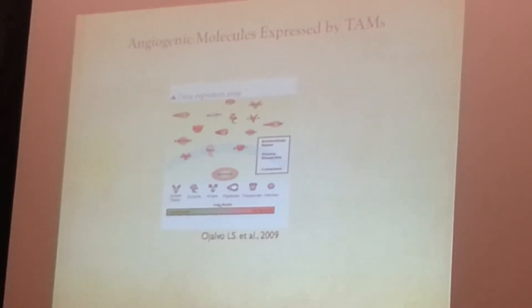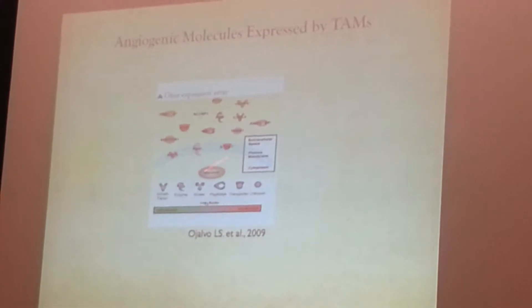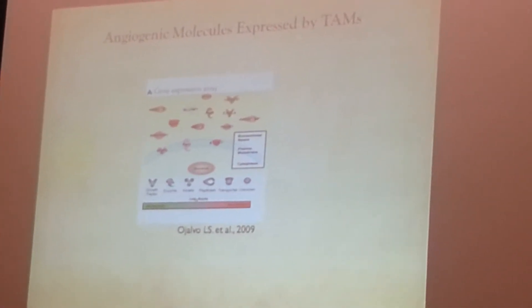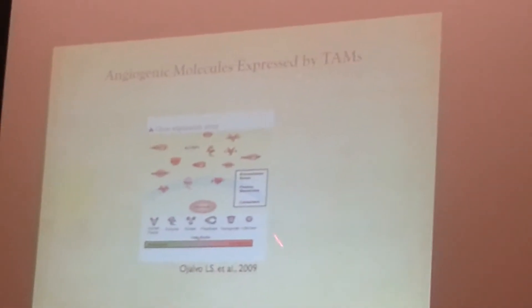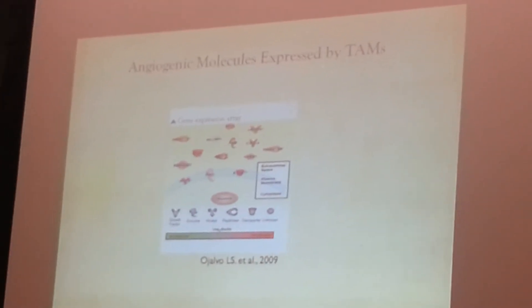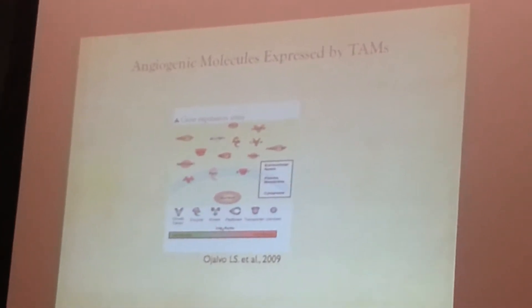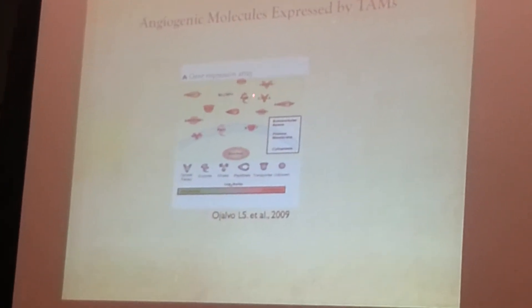she did a gene expression array in the tumor-associated macrophages, and she tested for different proteins that are supposed to participate in angiogenesis. Those that are red, or more red, are with the high levels. These are found in high levels in tumor-associated macrophages, and you can see that one of them is VEGF.